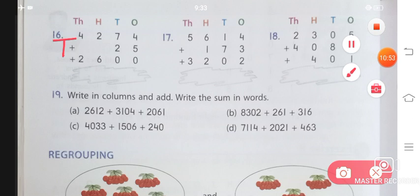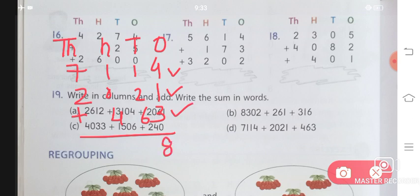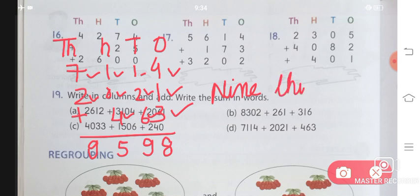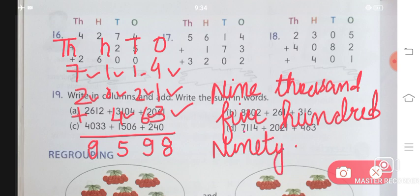Now let us do part D. Again writing thousands, hundreds, tens and ones place. Fill in the digits quickly and then we will add them. 4 plus 1 plus 3 will give you 8. 1 plus 2 plus 6 will give you 9. 1 plus 0 plus 4 will give you 5. 7 plus 2 will give you 9. Answer is 9,598. In words: nine thousand, five hundred and ninety-eight. This is the solution.